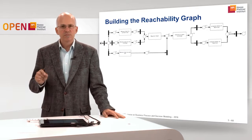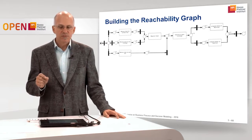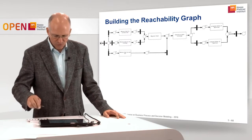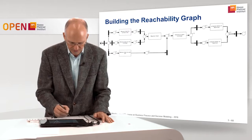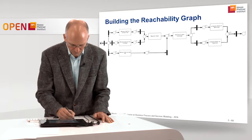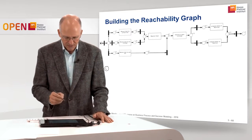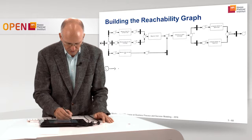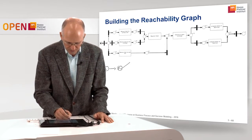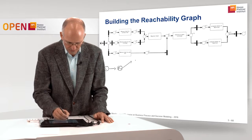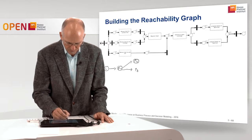Now we need to create the reachability graph on the basis of this Petri Net. The initial state is state i. In state i only one transition can fire — the silent transition — bringing us to state P1. In state P1, any of the three transitions can fire. The upper transition brings us to state P2, the middle transition to state P3, and the lower transition to state P4.